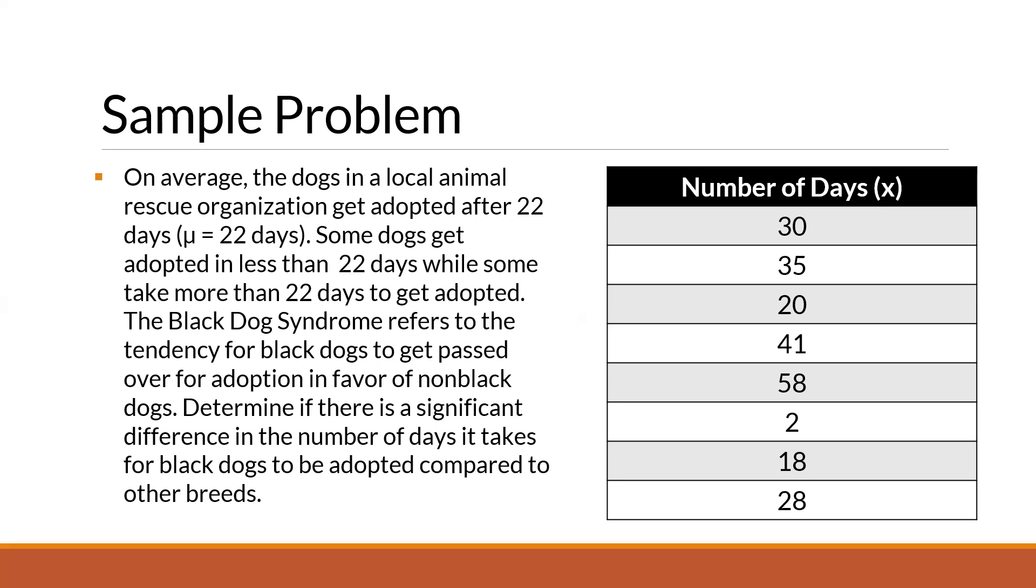So we want to know, does the number of days it takes for black dogs to get adopted significantly differ from the mean number of days for all dogs to get adopted, which is 22.